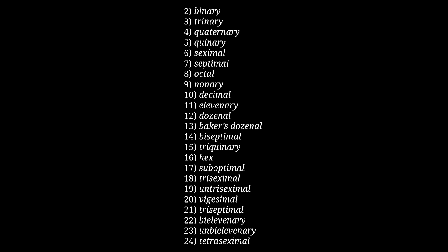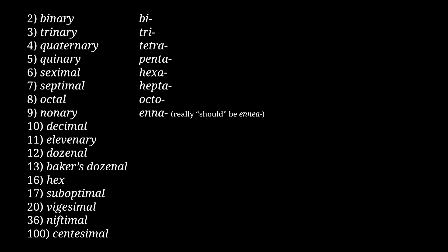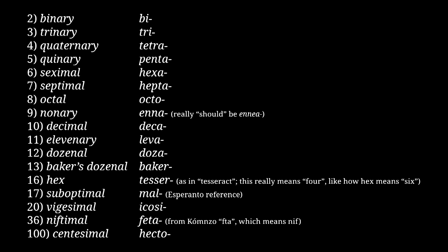Now's a good time to talk about the rest of the multiplicative prefixes. Every root name has a corresponding prefix — in general these prefixes are from ancient Greek, like how hexadecimal combines both Greek and Latin. Some aren't, though — like 'bi' for 2 is a Latin thing. But: bi is 2, tri is 3, tetra is 4, penta is 5, hexa is 6, hepta is 7, octo is 8, enna is 9, deca is 10, leva is 11, doza is 12, baker is 13, tesser is 16, mal is 17, icosi is 20, feta is 36, and hecto is 100.